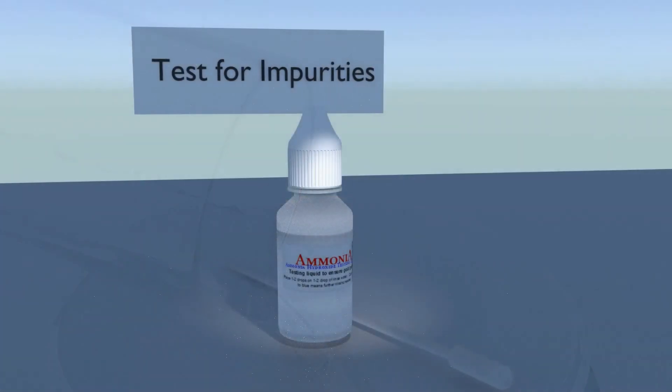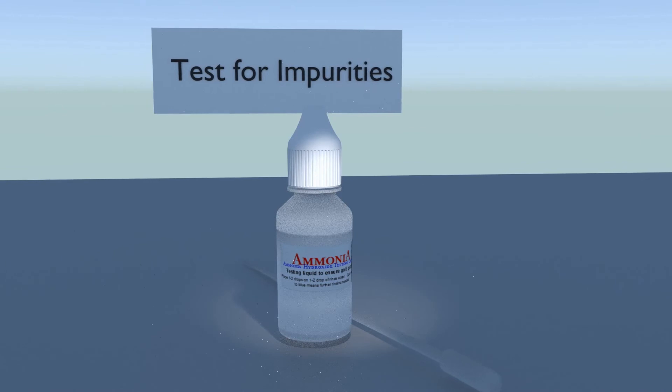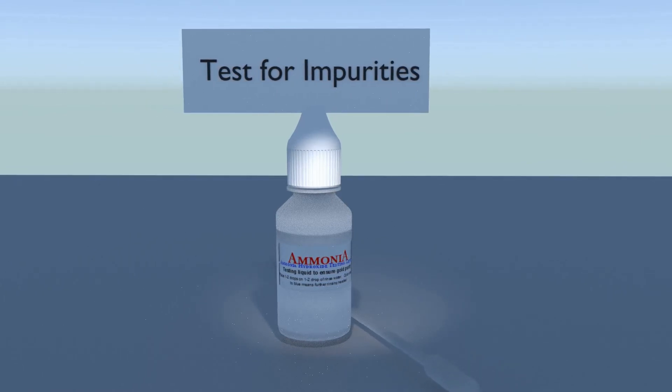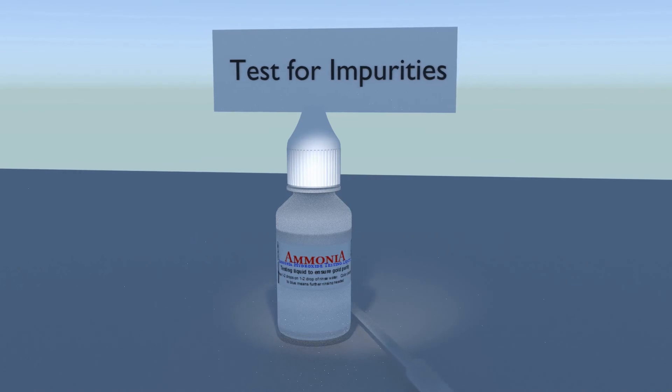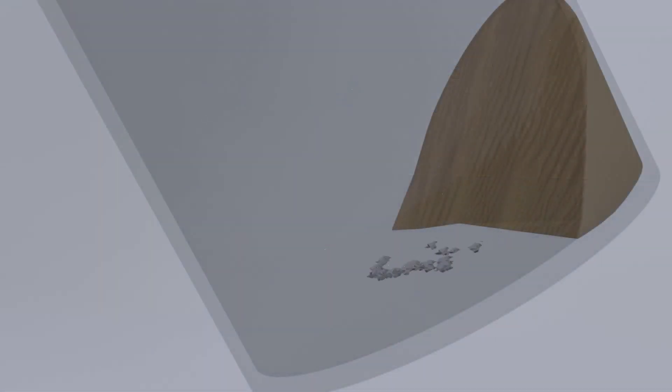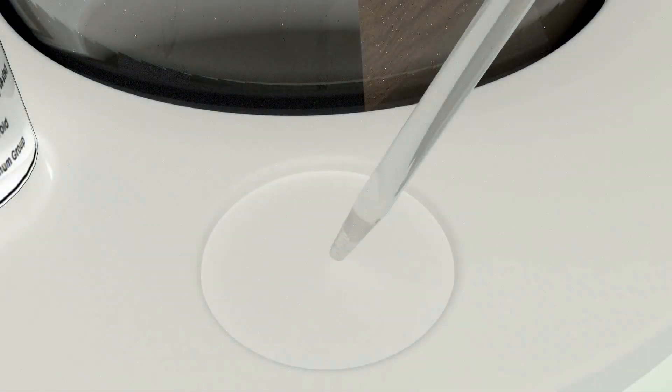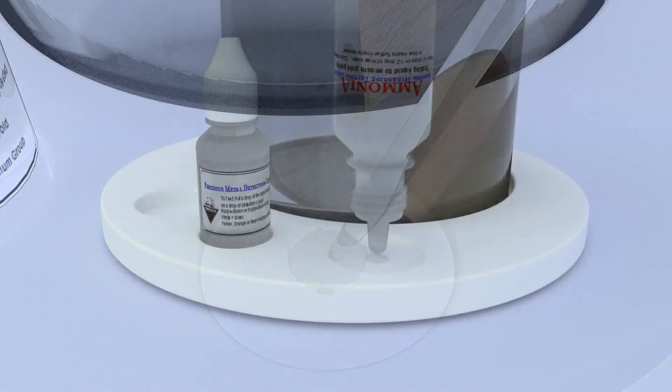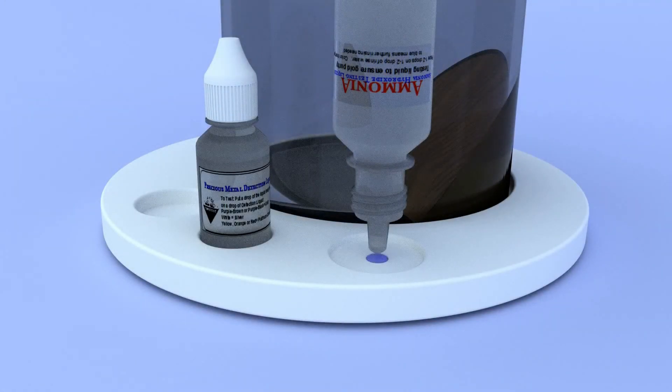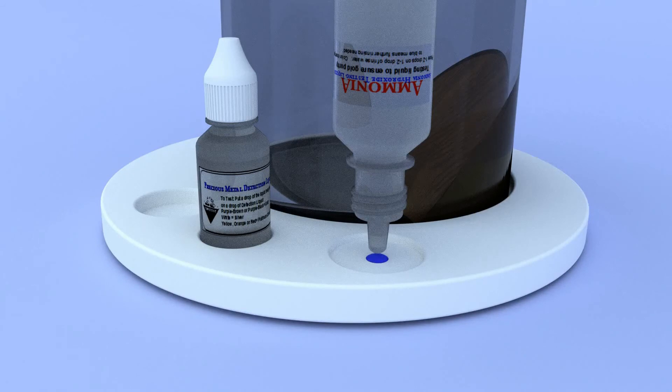Bring your chamber back indoors. We're going to test to ensure that no dissolved impurities are clinging to the gold mud. Tilt your chamber. The small amount of water in your gold mud will drip down, puddling in the bottom corner of your chamber. Using your pipette, take a sample of the water. Place a drop or two on the spot plate. Add a drop of ammonia test liquid. This test will ensure that no dissolved impurities will remain clinging to your gold mud.